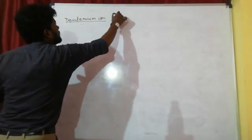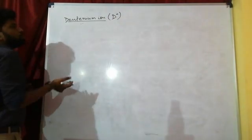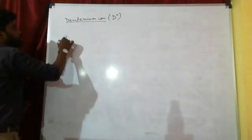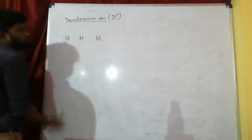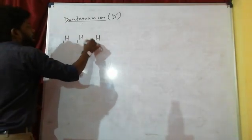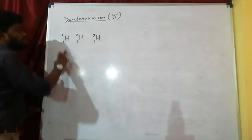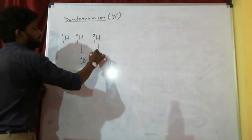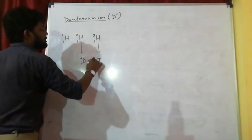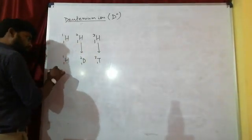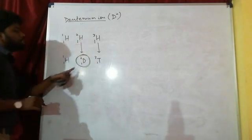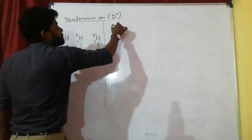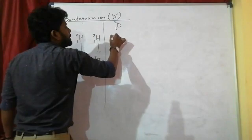What is Deuterium Ion? It is D plus. Isotopes have the same atomic number but different mass numbers. Hydrogen basically has 3 isotopes with atomic mass 1, 2, and 3. This is Protium, this is Deuterium, and this is Tritium. Deuterium is D-1,2 and Tritium is D-1,3. Deuterium is the second isotope of Hydrogen. This is the Deuterium atom - D with atomic number 1 and mass number 2. And this is the electron.